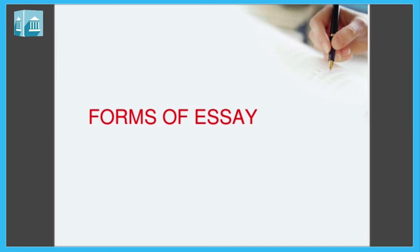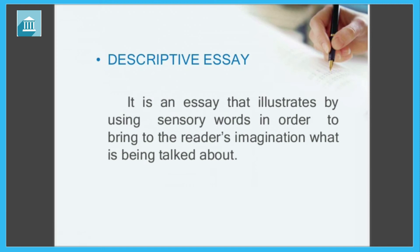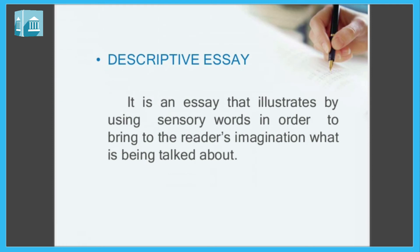Then we have forms of essay. Do type ke essay hain, aur usmein forms bhi hote hain. Descriptive essay — jo describe karta hai kisi bhi cheez ko, kisi topic ko. It is an essay that illustrates by using sensory words in order to bring to the reader's imagination what is being talked about. Yoh itna descriptive hota hai ki jo samne se padh raha hota hai, woh ek proper cheez imagine kare — for example, ek insaan hai, usne red color ki shirt pehni hai, blue color ke shorts pehne hain — something like that.